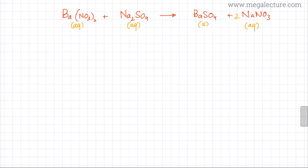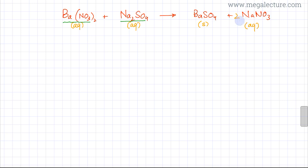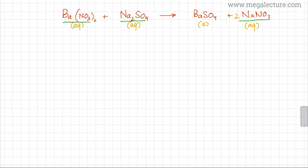Any substance that is aqueous — an acid, base, or salt — is going to dissociate, but barium sulfate is not going to dissociate. I'm going to rewrite this equation in dissociated form. The underlined substances, when dissolved in water, will have their ions scatter in solution.